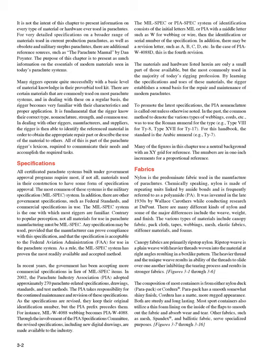Specifications: All certificated parachute systems built under government approval programs require most, if not all, materials used in their construction to have some form of specification approval. The most common of these systems is the military specification, or mil-spec system. In addition, there are other government specifications, such as federal standards, and commercial specifications in use. The mil-spec system is the one with which most riggers are familiar.